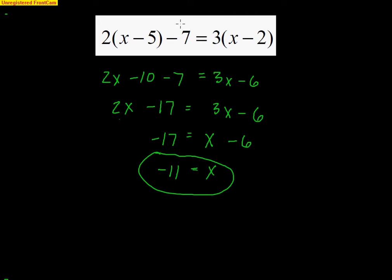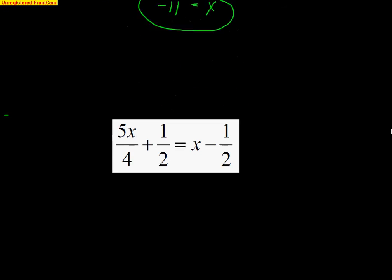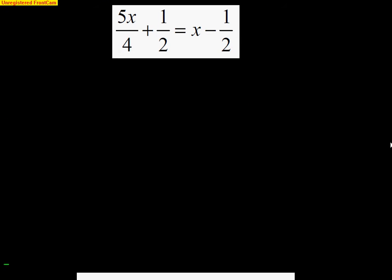Adding 6 to both sides gives negative 17 plus 6 equals negative 11. So x equals negative 11 — that's the final answer. Plug it back in to check and make sure it works. Linears are really easy. Let's move on to some fractional ones.